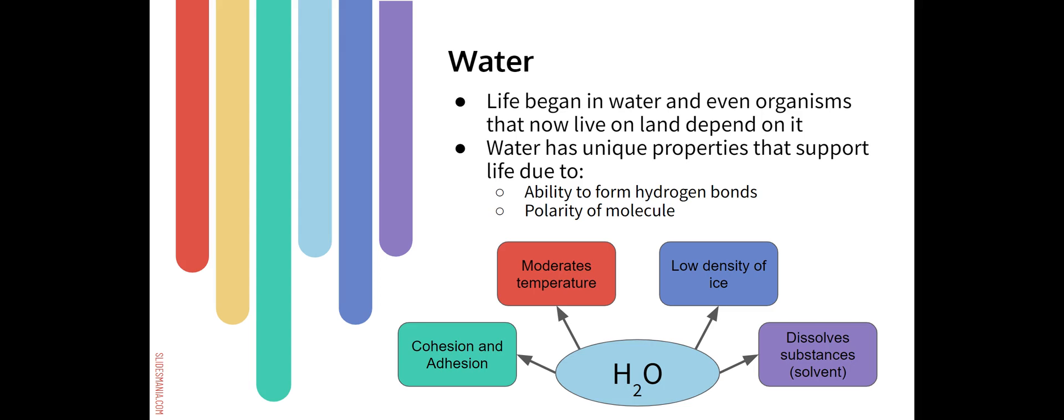So water is really essential for life and that's why when scientists are looking for life on other planets, often they search for planets that have water. And that's because water has a number of unique properties that make it essential to life on Earth, at least as we know it. And those properties come down to water's ability to form hydrogen bonds. And these hydrogen bonds ultimately come down to the polarity of a water molecule.